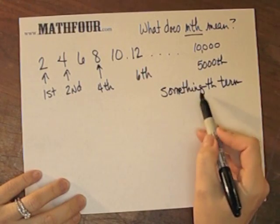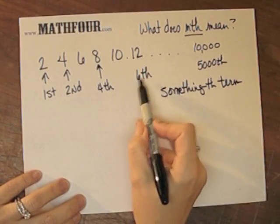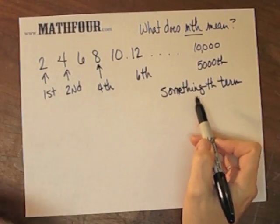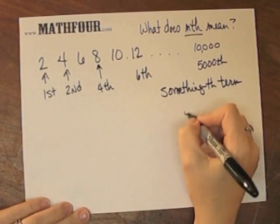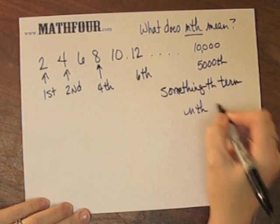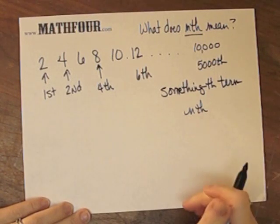So if you want the somethingth term, the sixth term, the seventh term, the something or another term, instead of saying somethingth, which sounds really weird, we call it the nth term.